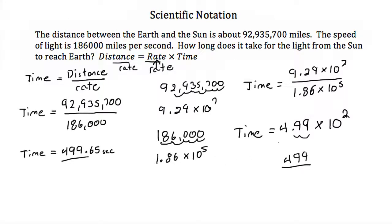So the benefit of scientific notation is that if you end up with very long numbers like 92,935,700, often it's easier to do the math by just converting it to scientific notation because 9.29 divided by 1.86 is easier to deal with than 92,935,700 divided by 186,000. So that completes the tutorial on scientific notation.